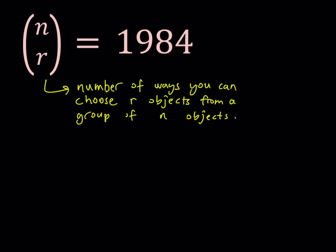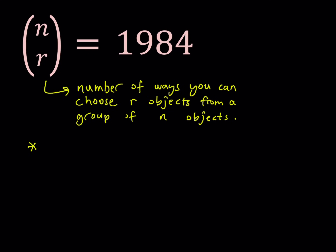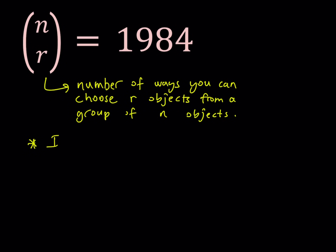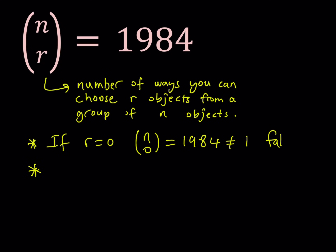Let's go ahead and look at some special cases first. If r is equal to 0, just like I mentioned, then we're going to be getting something like n choose 0 equals 1984. But as you see, this is impossible because n choose 0 is always 1, and obviously 1984 does not equal 1. So that would be a problem — in this case, we don't get any solutions. This can't happen.